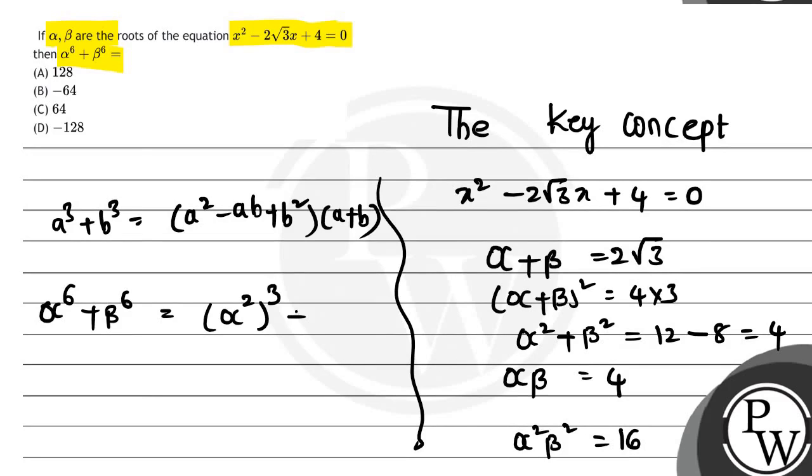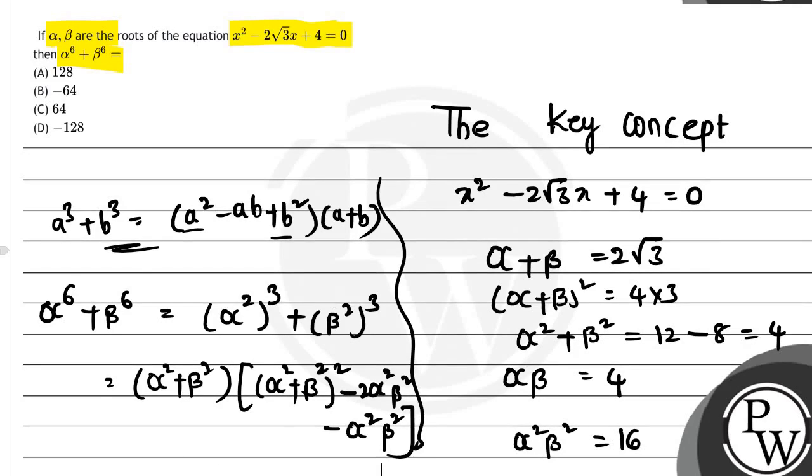Applying this formula, we get (α²)³ + (β²)³ = (α² + β²)[(α² + β²)² - α²β²]. This simplifies to (α² + β²)[(α² + β²)² - 3α²β²].